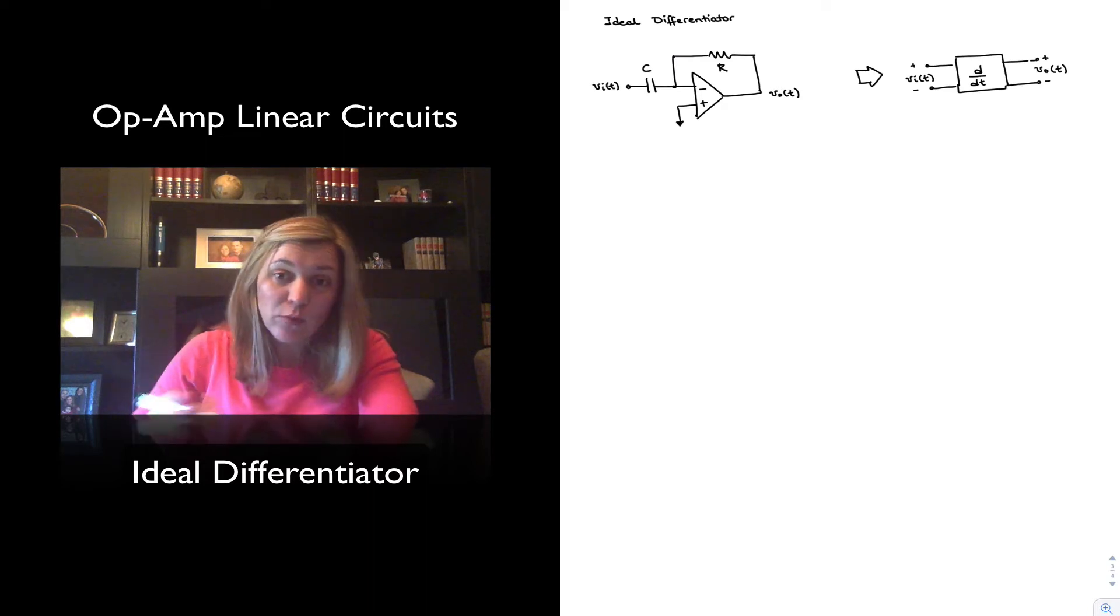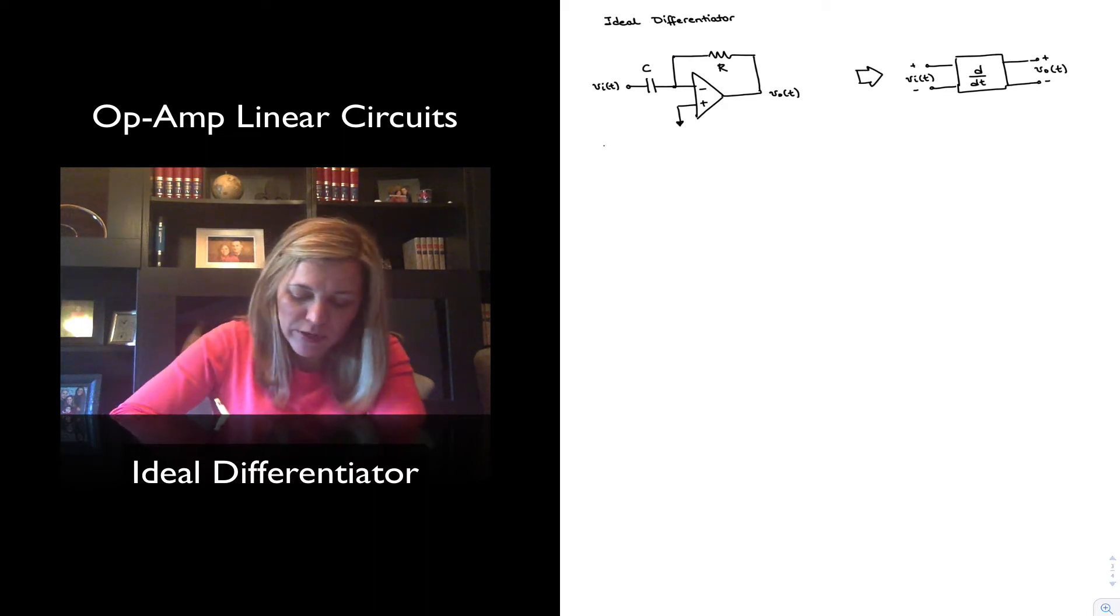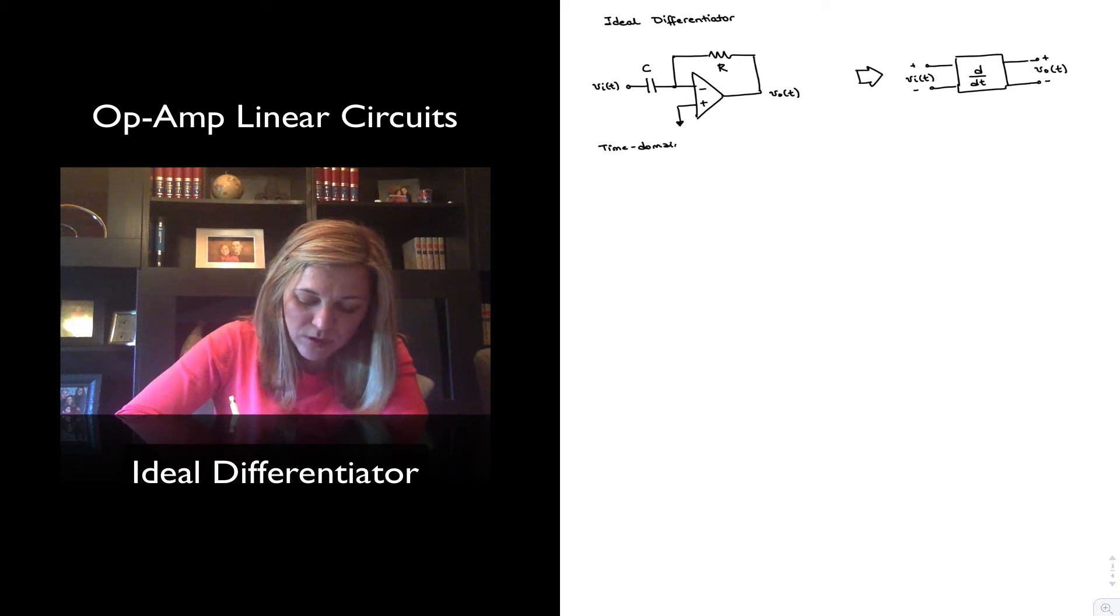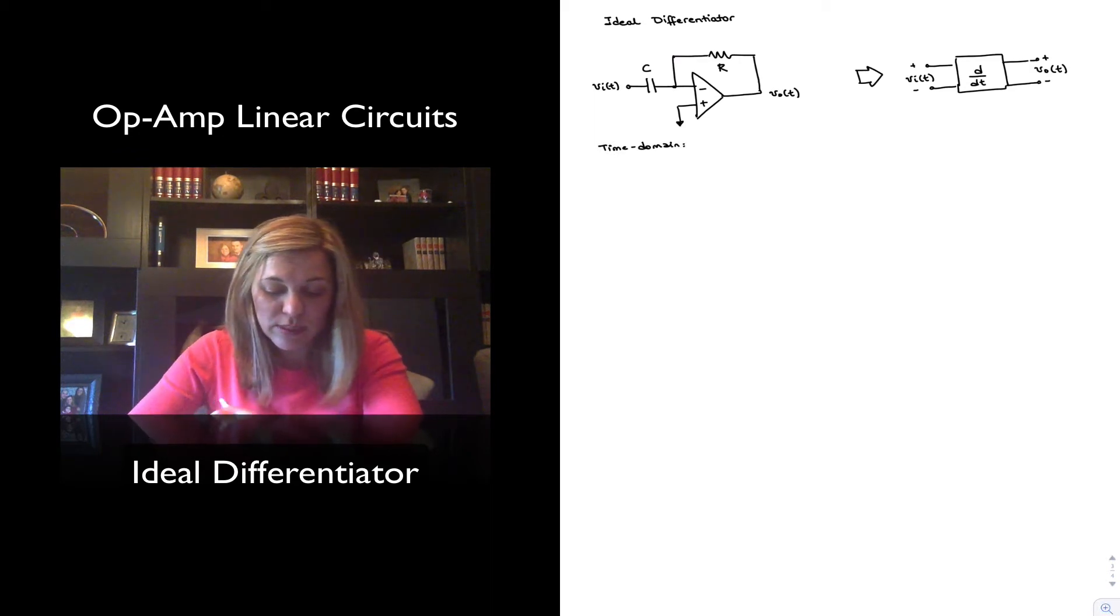We can analyze this circuit both in the time domain and the frequency domain. If we were to do the time domain analysis, we will start by noticing that there is no current going into the input terminal of the op-amp. And so the voltage Vi will generate a current flowing through the capacitor C, and all that current will also flow through resistor R.